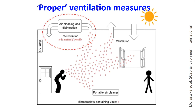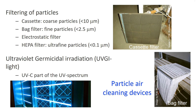If general ventilation seems not enough, or recirculation and reuse of air cannot be avoided, add air-cleaning devices. Air cleaning in most mechanical ventilation systems comprises filtering the outdoor incoming air of particles smaller than 10 microns by a cassette filter, and particles smaller than 2.5 microns by a bag filter.